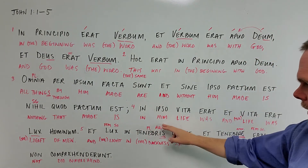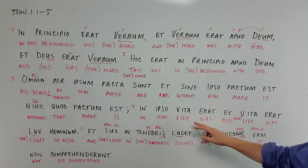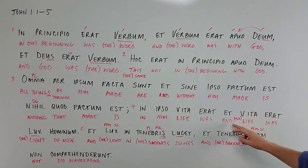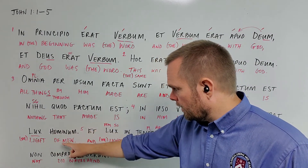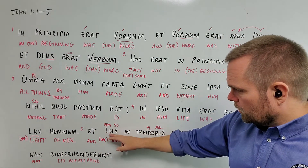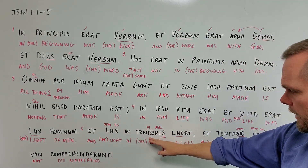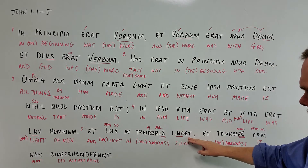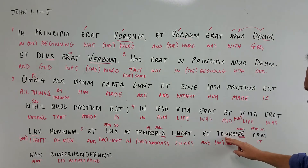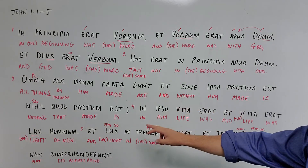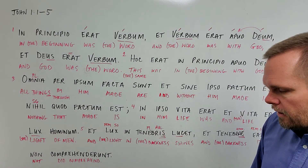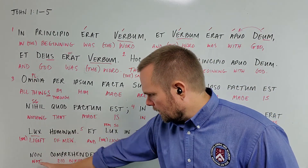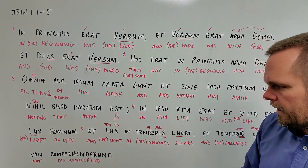Verse 4: in ipso vita erat — in him life was. Et vita erat lux hominum — and the life was the light of men. Verse 5: et lux in tenebris lucet — and the light in the darkness shines. Et tenebris eam non comprehenderunt — and the darkness, it — referring back to lux, the light — not did comprehend. Word for word, keep it as 'not did comprehend.'